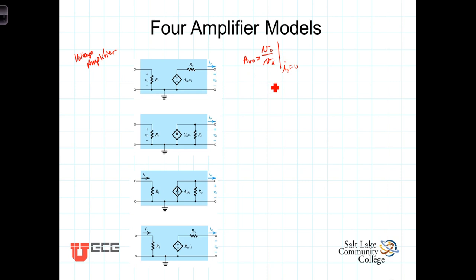With no load connected, which means open circuit, the output voltage Vout will equal the open circuit voltage gain AV0 times Vn. In this case, AV0 has the units of volts per volt.